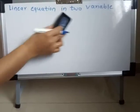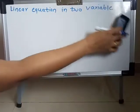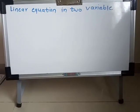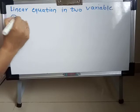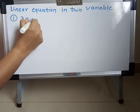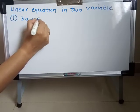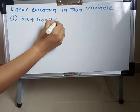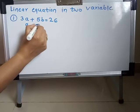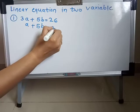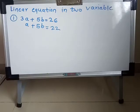Practice set 1.1, question one: solve the following simultaneous equations. The first equation is 3A plus 5B is equal to 26, and the second equation is A plus 5B is equal to 22.